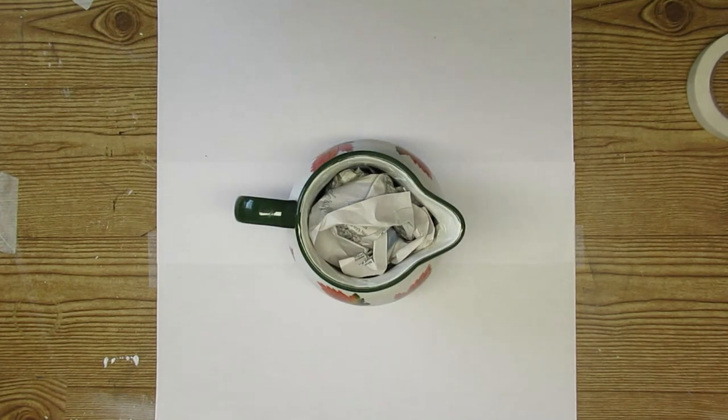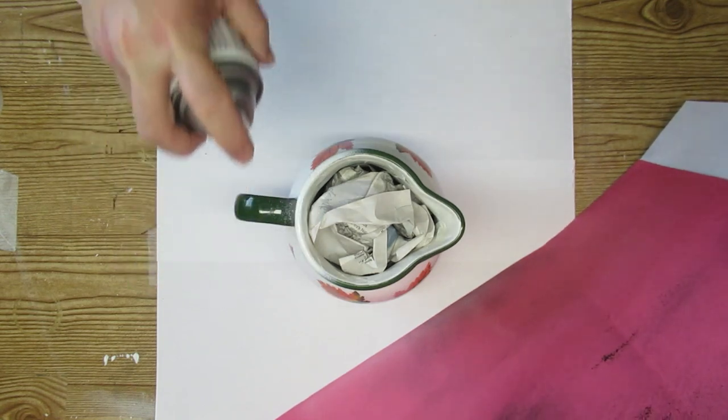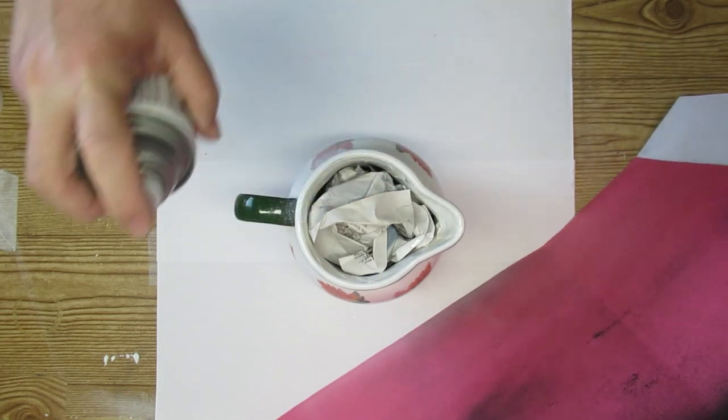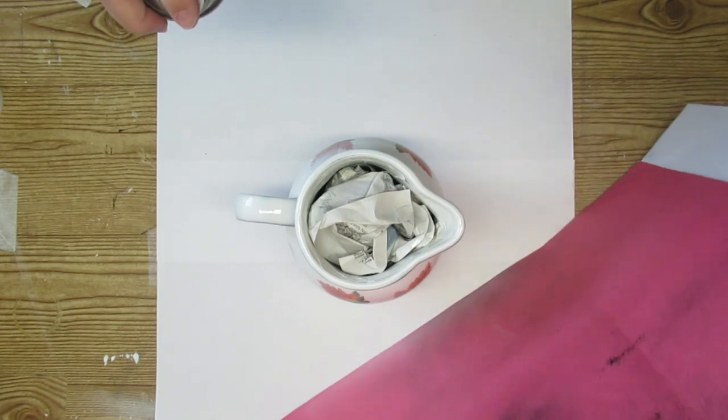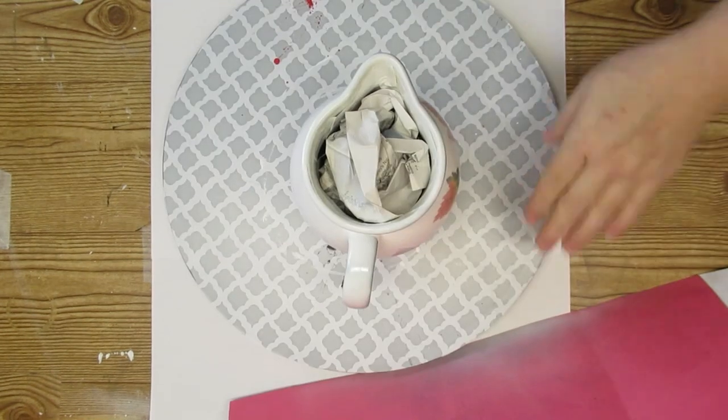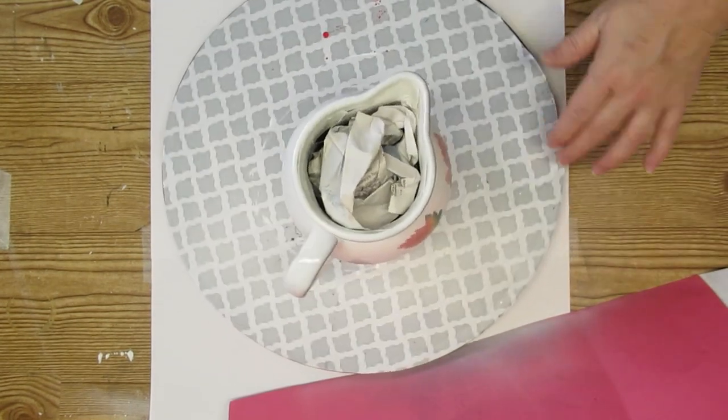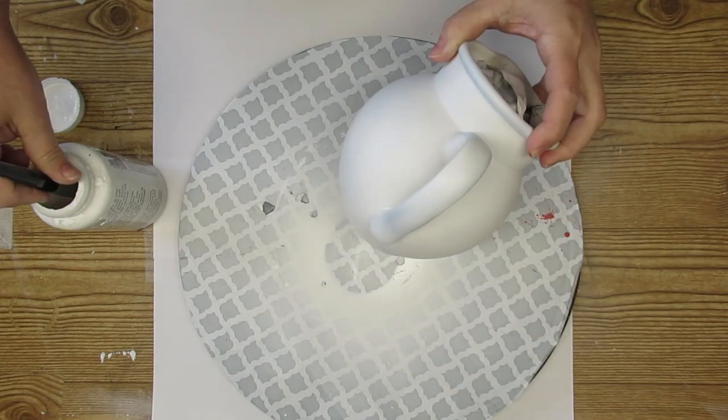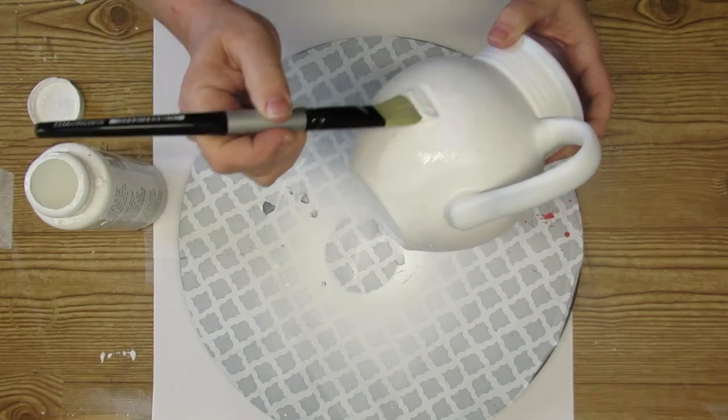I'm using white paint and primer in one spray paint. This is a Premier brand and I just get it at my local hardware store. I started spraying it and then realized that I have a lazy Susan, which is something that comes in really handy when you're spray painting or painting anything for that matter because you can spin the product around and you don't have to touch it.